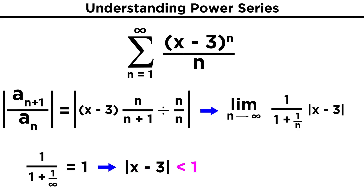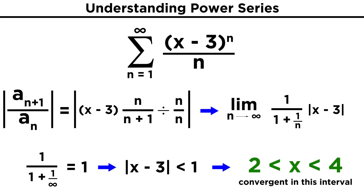In order to be convergent, this has to be less than one. So given the absolute value, we know that x minus three must be less than one and greater than negative one. Adding three throughout, we get x as being between two and four, so those are the values for which the series converges.